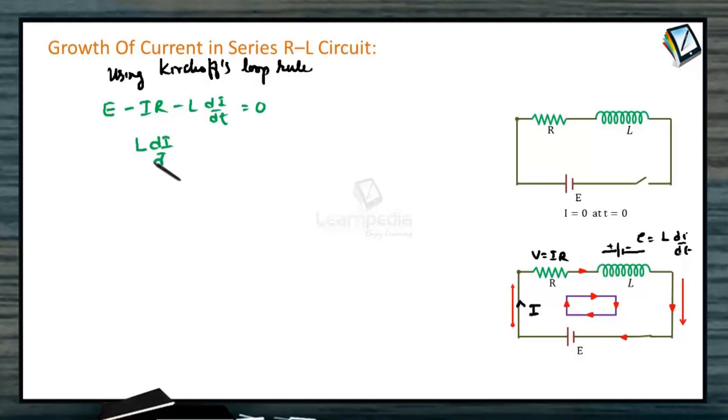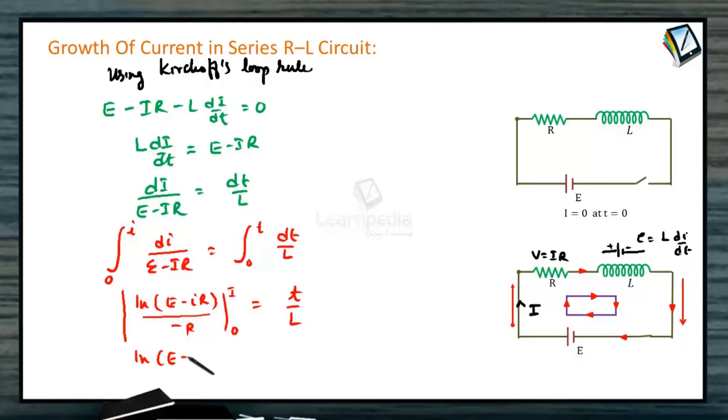L di by dt can be written as E minus IR. Bringing all I terms together and other terms to the other side, di divided by E minus IR equals dt by L. Integrating both sides of the equation, we get integration from 0 to I of di divided by E minus IR equals integration 0 to t of dt by L. This gives ln of E minus IR divided by minus R, limits from 0 to I, equals t by L. Substituting the limits: ln of E minus IR minus ln E equals minus Rt by L. So ln of E minus IR by E equals minus Rt by L.